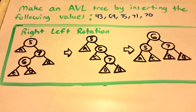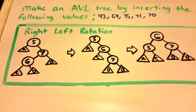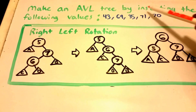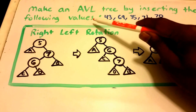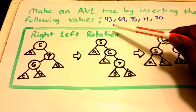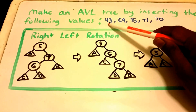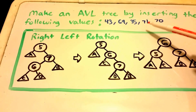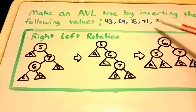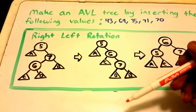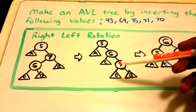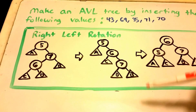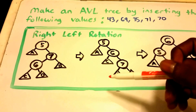Hey guys and welcome to this video on AVL trees. We want to make an AVL tree by inserting the following values: 43, 69, 35, 71, and 70. We're going to see that we need to do what's called a right-left rotation to balance our tree. So let's go ahead and get started.